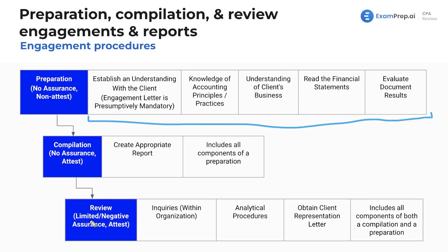Within a review, you have limited negative assurance — it is an attest engagement. You make inquiries only within the organization, perform analytical procedures, and obtain a client representation letter, in addition to everything from the lower-level engagements. Each level builds upon the last, kind of like ordering add-ons at a restaurant — you get your base and then stack on more.